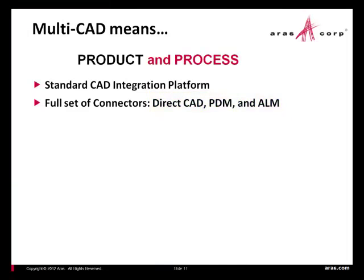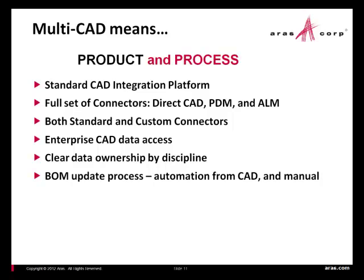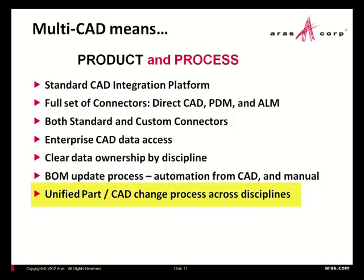Direct CAD, PDM, ALM — those are our three categories of CAD connectors. We also need the ability to do both standard and custom connectors, because if you don't have a way to build a custom connector and that's part of what multi-CAD means to you, you're out of luck. Enterprise CAD data access is also important — how do non-CAD users get to the CAD data and how easy is it for them? Clear data ownership by discipline matters too: multi-CAD, unless it's just multi-MCAD, is typically multi-discipline CAD, and when you bring that together in a common bill of materials, you need to track ownership. The BOM update — that second step in our process — is the automation around the BOM, coupled with the ability to do manual updates, because it's never going to be a perfectly automated process coming from CAD.